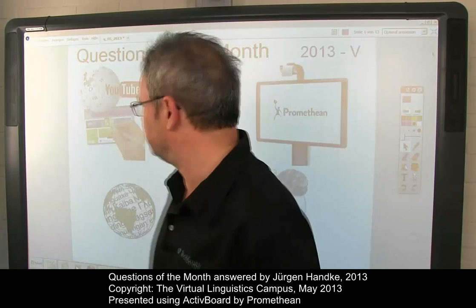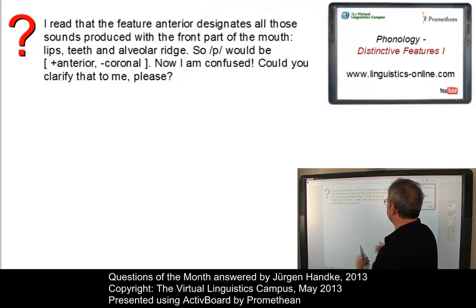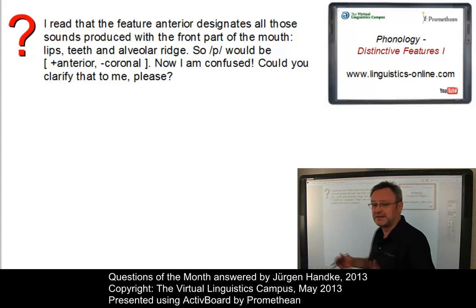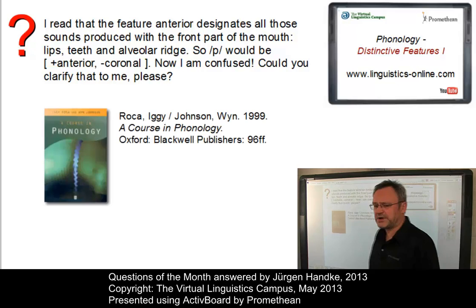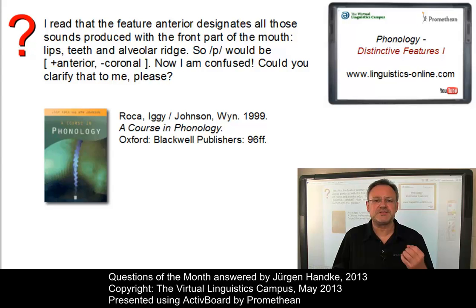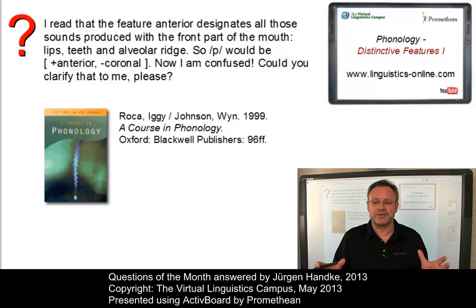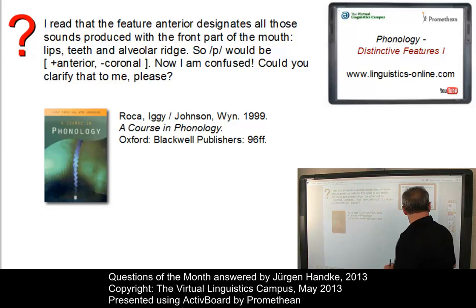Here is the first problem. It concerns the use of distinctive features. The question is that someone read that the feature 'anterior' designates all those sounds produced with the front part of the mouth, which would include the present-day English phoneme /p/, the bilabial plosive. As I already explained in another Question of the Month video, we have taken our distinctive feature information from the phonology book by Iggy Roker and Wyn Johnson, where on page 96 the feature 'coronal' is defined as pertaining to the blade of the tongue. So /p/ is clearly non-coronal. Thus the feature 'anterior', which is dependent on 'coronal' and divides the hard palate into two regions, does not apply at all. The bilabial plosive is neither associated with the feature coronal nor with anterior, so it is not listed among those present-day English phonemes that are coronal.